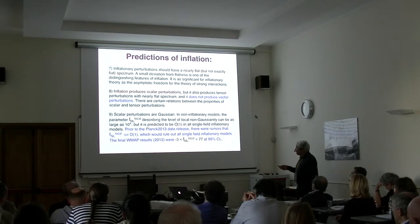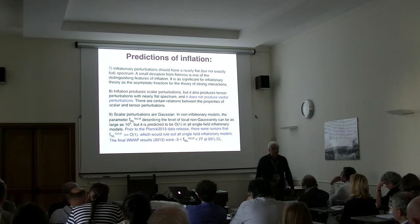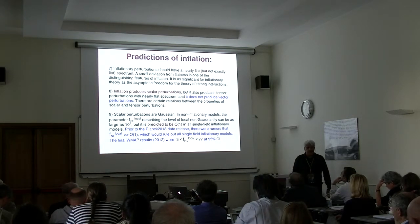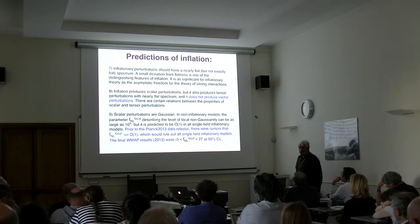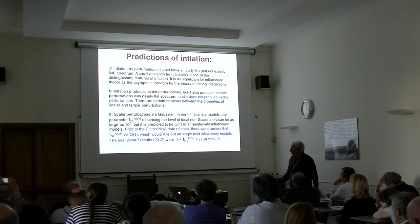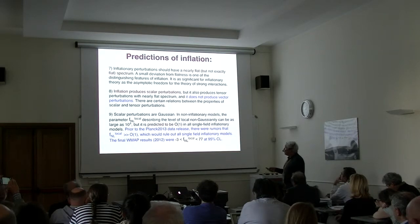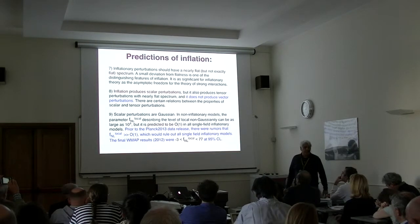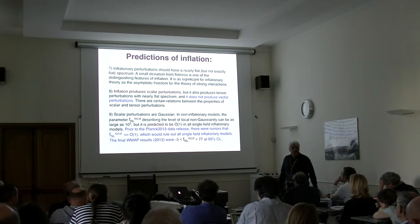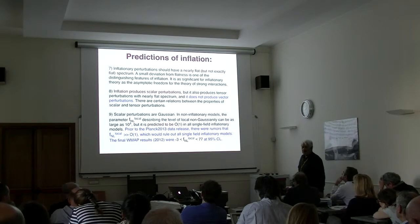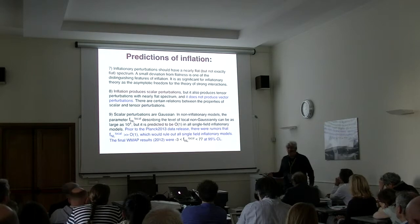Inflation produces scalar perturbations but not vector perturbations. If we observed vector perturbations — which cosmic strings could generate — that would be a problem for inflation. Inflation does produce tensor perturbations, but their amplitude can be large or small; in some string theory models it can be as small as 10^-10, so detecting them may be extremely difficult.